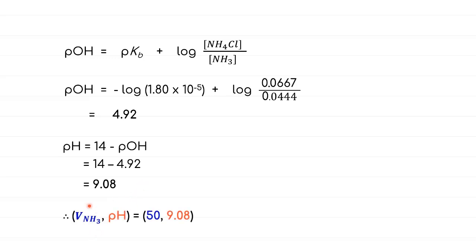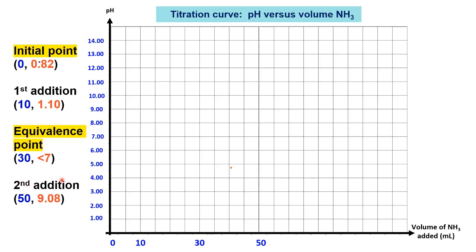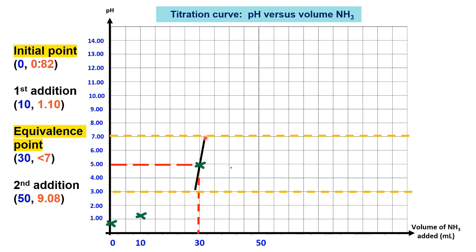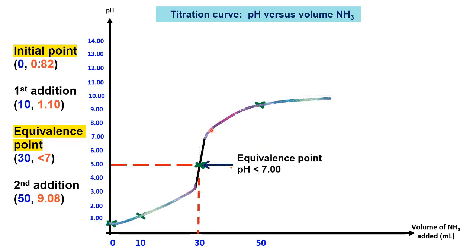The final coordinate is: volume of NH₃ = 50 mL, pH = 9.08. Plotting all points on the titration curve of pH versus volume of NH₃: the initial point is at (0 mL, 0.82), then (10 mL, 1.10), the equivalence point at (30 mL, pH < 7) with a pH jump of 3 to 7 forming the steep slope, and the final point at (50 mL, 9.08). The resulting titration curve starts from below and curves upward. Don't forget to label the equivalence point pH, which is less than 7.